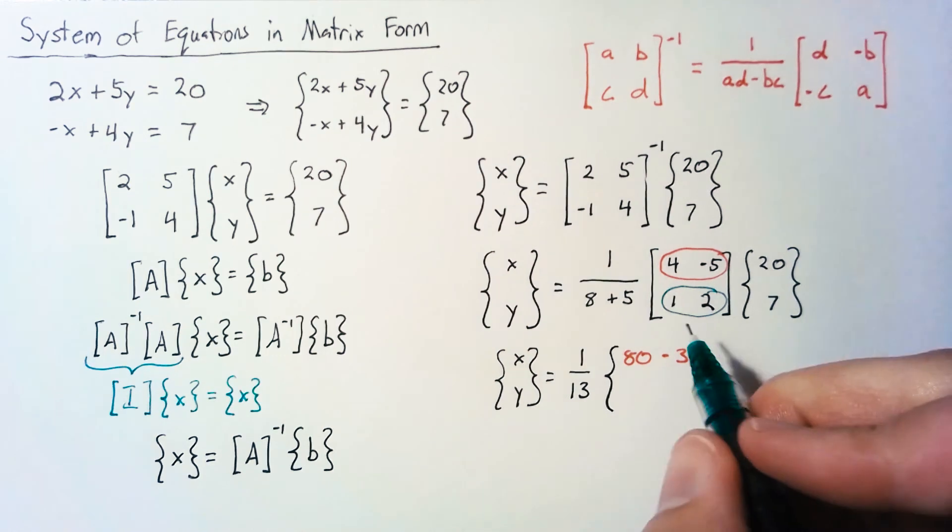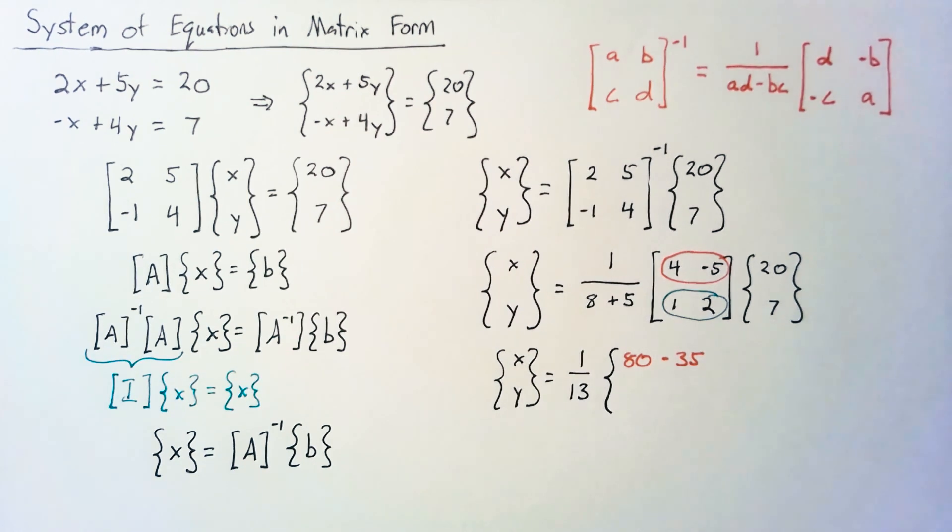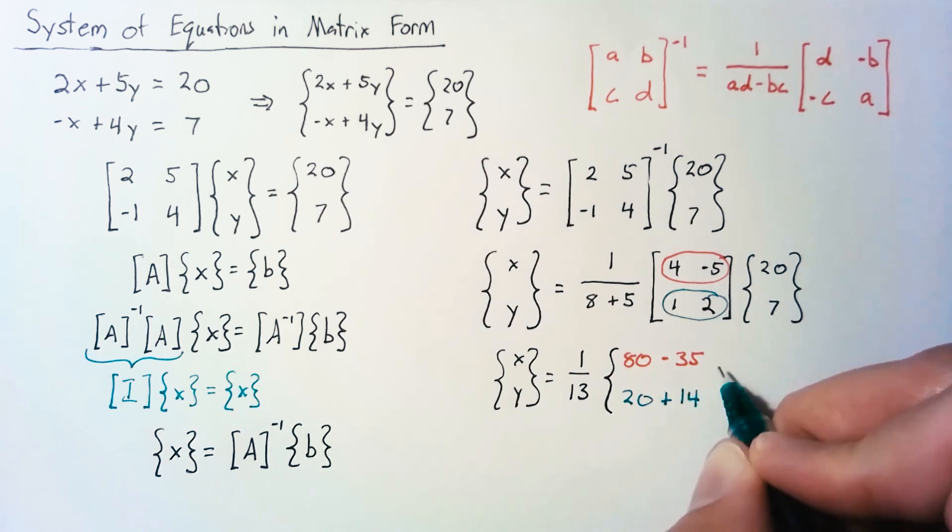For our second row, we have 1 times 20, which is just 20, plus 2 times 7, which is 14.